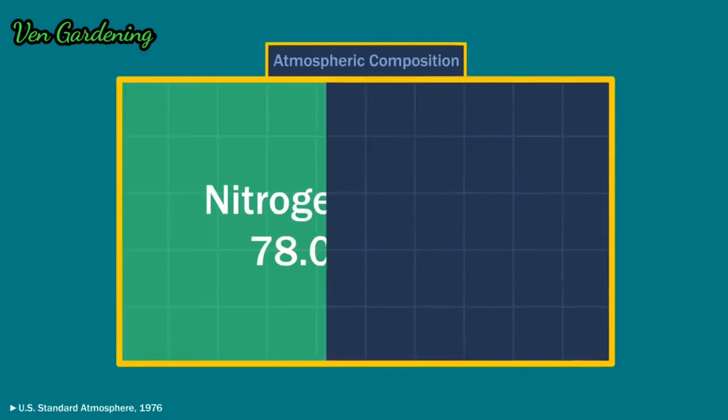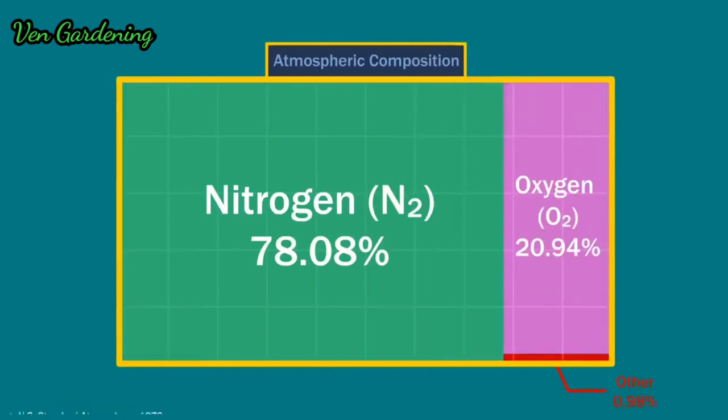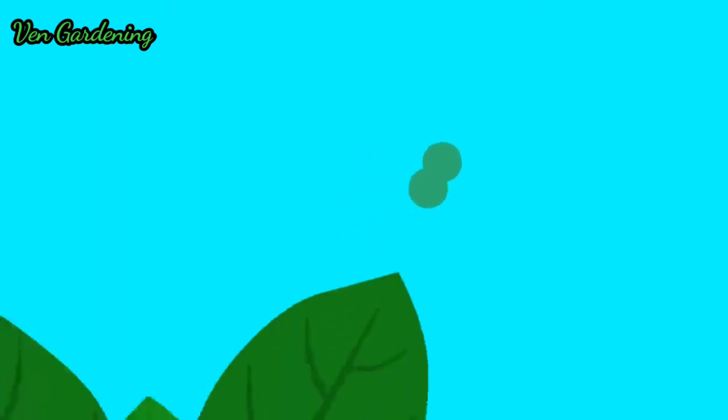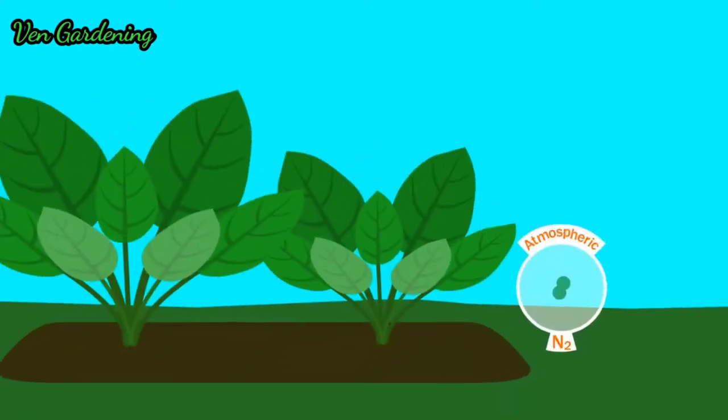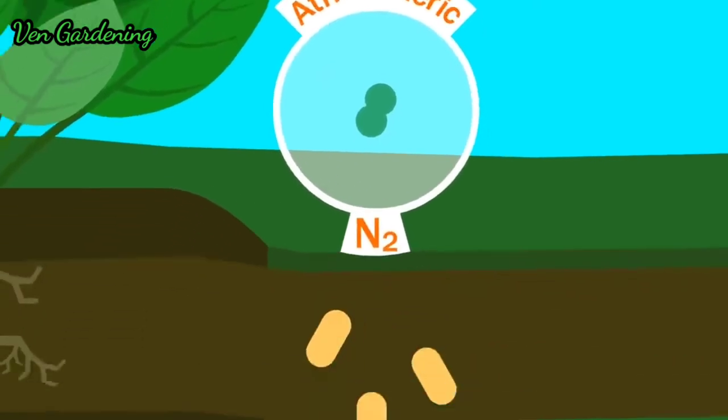Nitrogen makes up 78% of the Earth's atmosphere by volume. But most of this nitrogen takes the form of two nitrogen atoms strongly bonded together, which isn't very reactive and is useless to plants. For it to become plant-available, we need the help of bacteria.